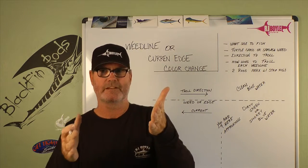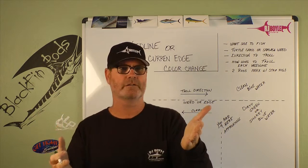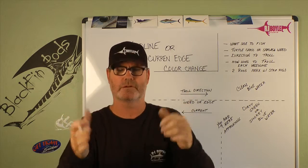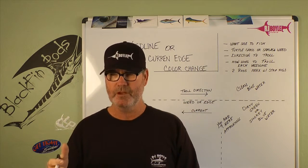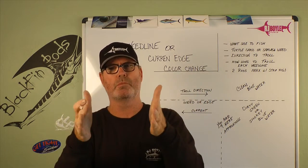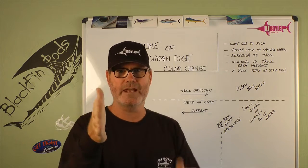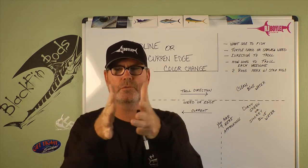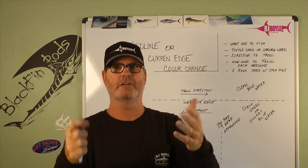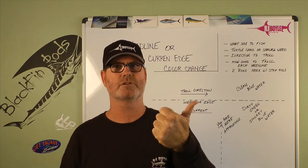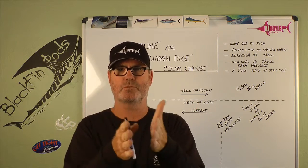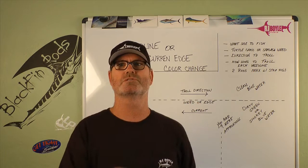The simplest current edge is green water on one side and blue on the other. We're going to get into what side you should troll, but understanding that edge — where those two pieces of water come together — is again probably going to be a current change, a temperature change, and at times that's where your food source is.